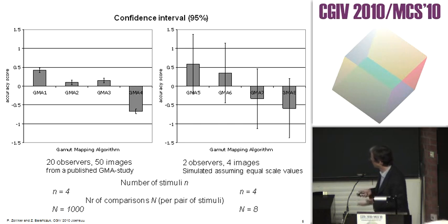I introduce two important numbers for those studies: the number of stimuli, small n, and the number of comparisons, capital N. On the left, capital N is much larger than on the right side.